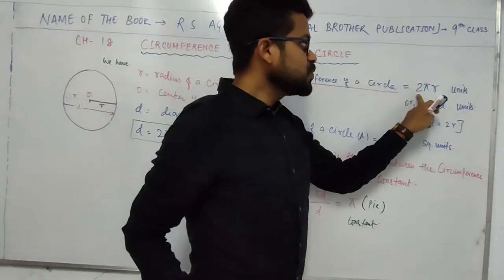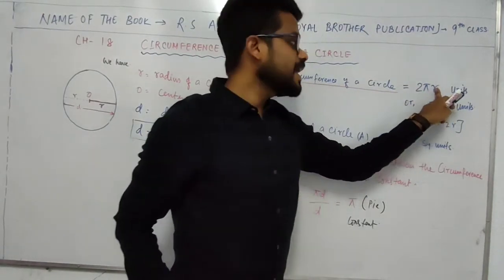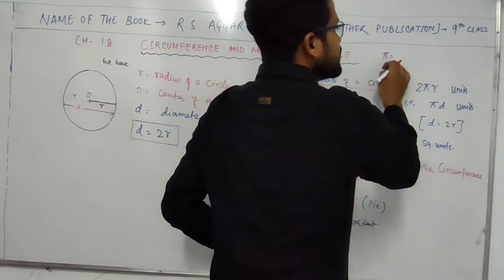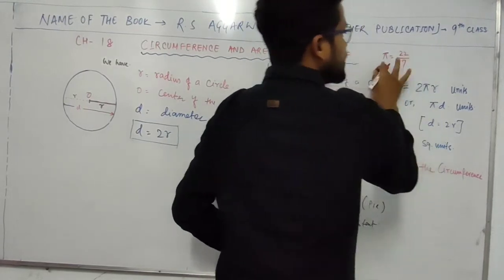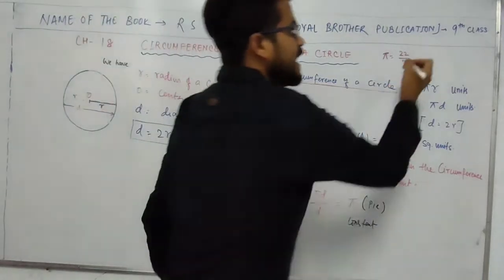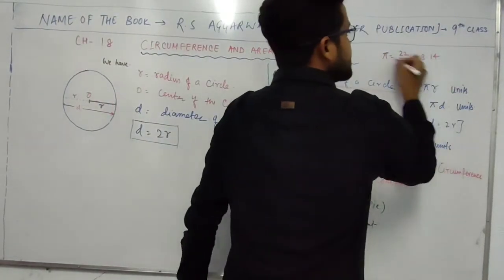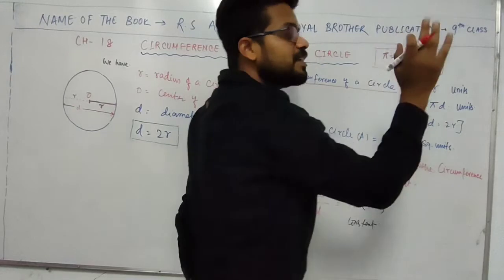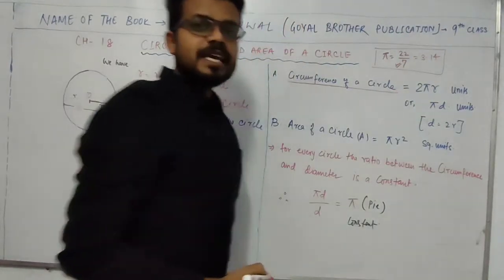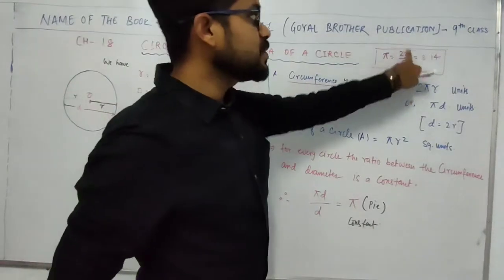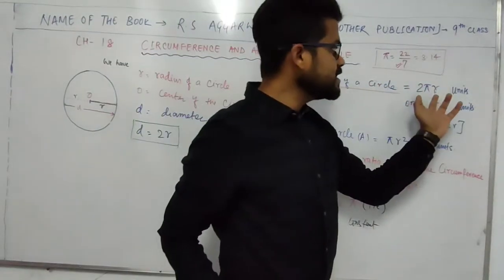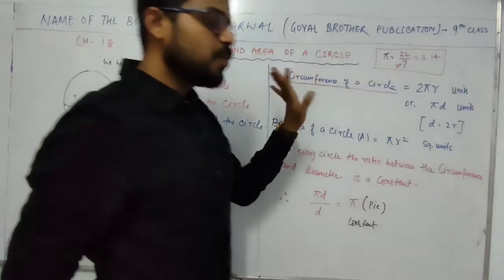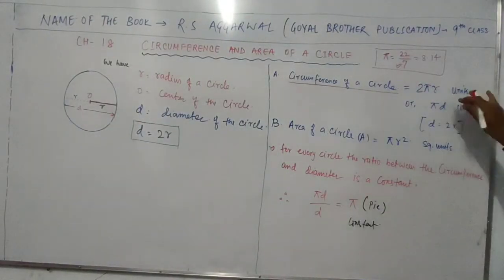Circumference is 2 times pi times r, where r is radius. Pi is basically a number which is 22 by 7, and also 3.14 — this is the value of pi. If in the problem the value of pi is not given, we generally take 22 by 7. So remember: pi is equal to 22 by 7. Circumference of a circle is 2πr units — the unit will be whatever is given in the problem, such as meters or centimeters.